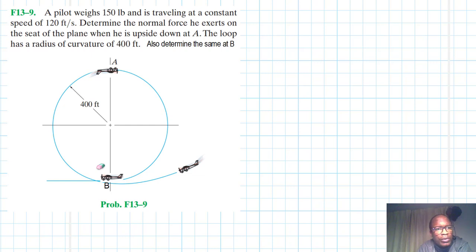Hello, I welcome you all. The problem reads: the pilot weighs 150 pounds and is traveling at a constant speed of 120 feet per second. Determine the normal force he exerts on the seat of the plane when he is upside down at A. The loop has a radius of curvature of 400 feet.